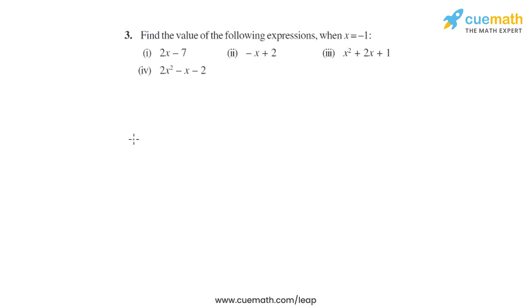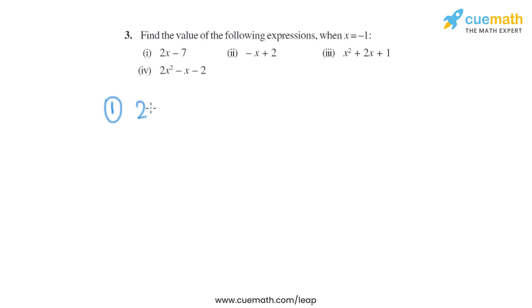Question 3 of this exercise says: find the value of the following expressions when x equals minus 1. We will find the value of these expressions by putting the value of x. Let's start with the first part. The expression given is 2x minus 7, and the value of x given is minus 1.